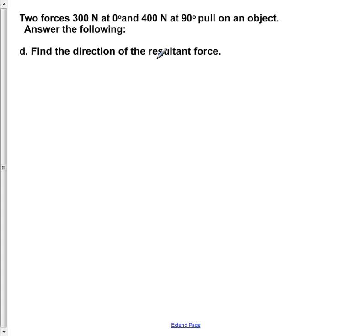Part D says find the direction of the resultant force. So once again we are going to draw our sketch of our vectors. Once again the 300 N force acting at 0 degrees. We then again have our 400 N force acting at 90 degrees, which results in our resultant of R. Now we want to calculate this angle here with respect to the X axis.